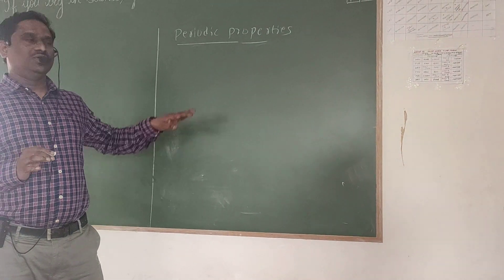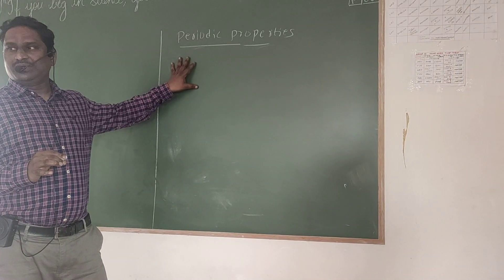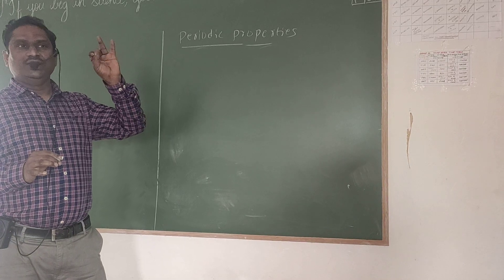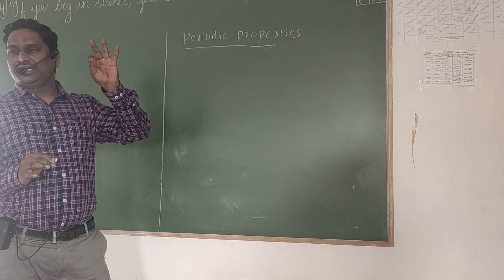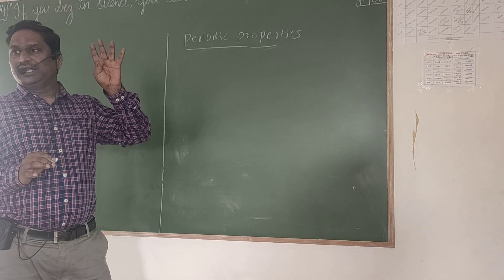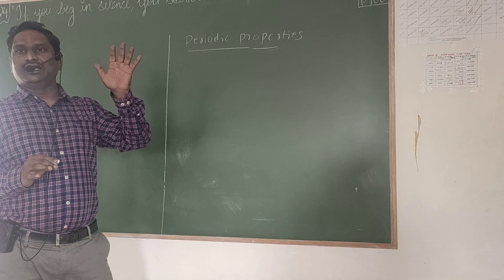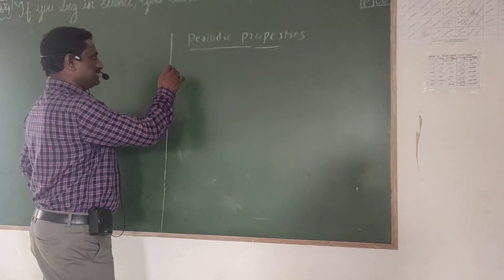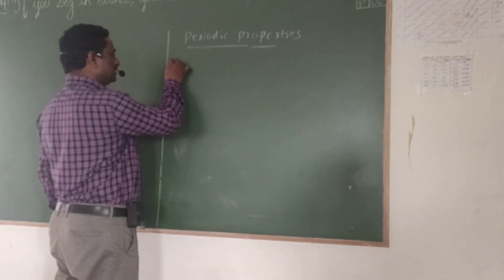Good morning, children. Up to now, we have discussed periodic properties: atomic size, ionization energy, electron affinity, electronegativity, metallic character, and non-metallic character. Let us see some more characteristic cells.